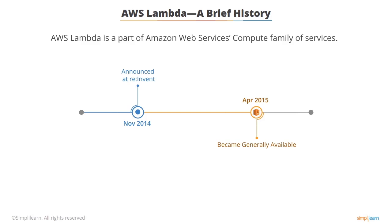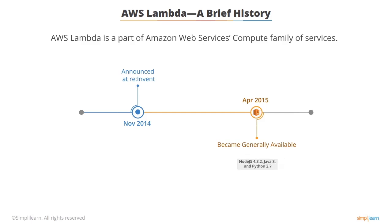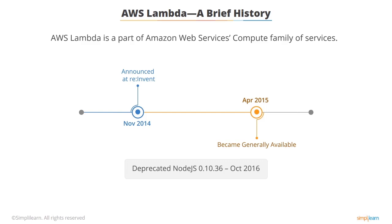At the time of introduction, Lambda only supported Node.js 0.10.36. AWS Lambda now supports Node.js 4.3.2, Java 8, and Python 2.7. Note that Node.js 0.10.36 is deprecated, and as of October 2016, you will no longer be able to create functions using this version.